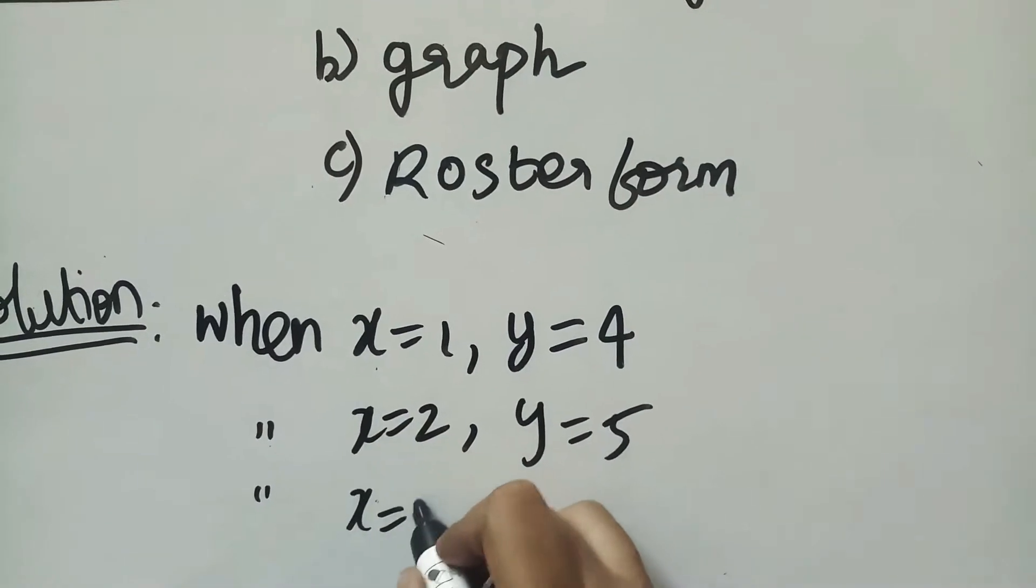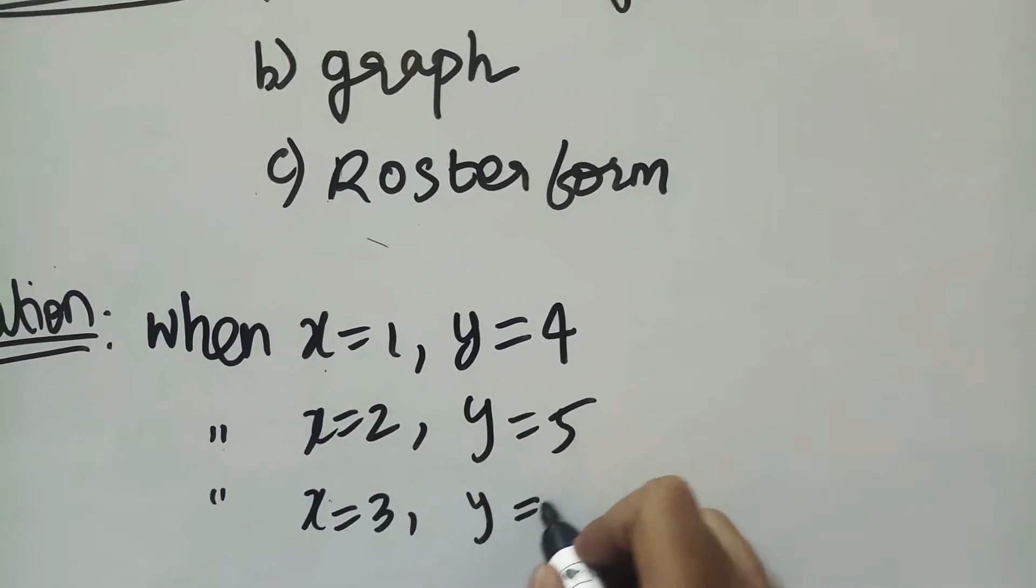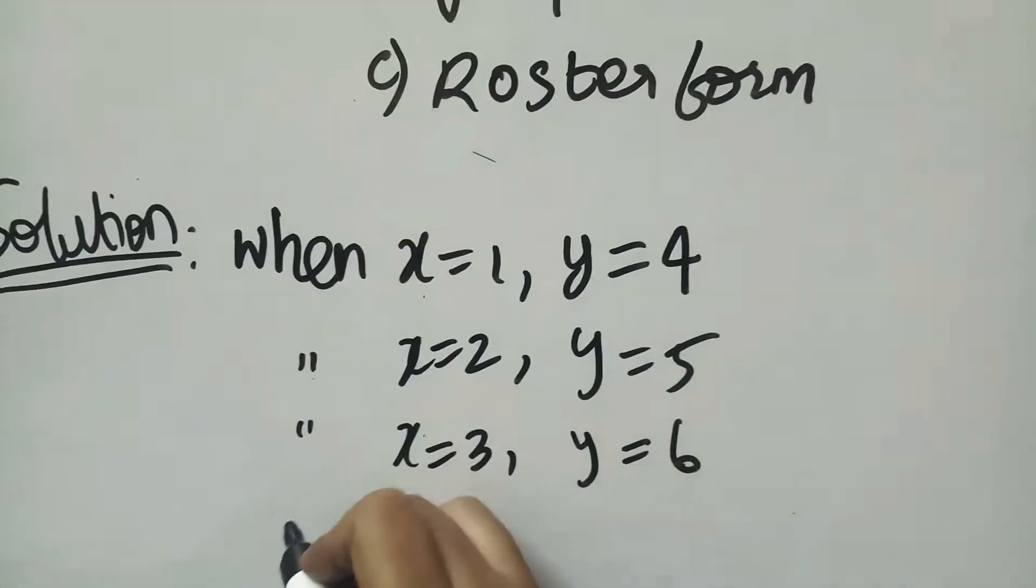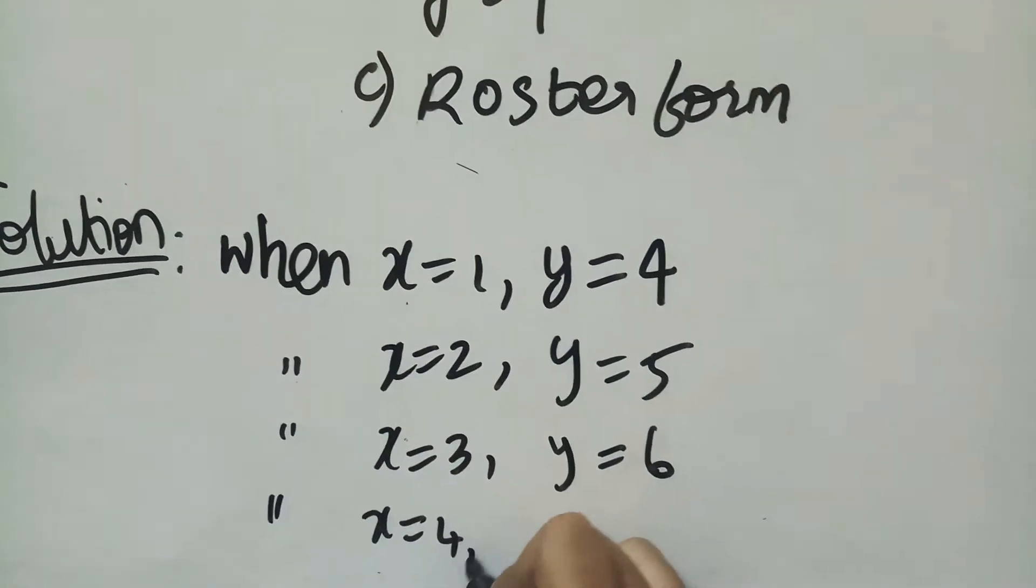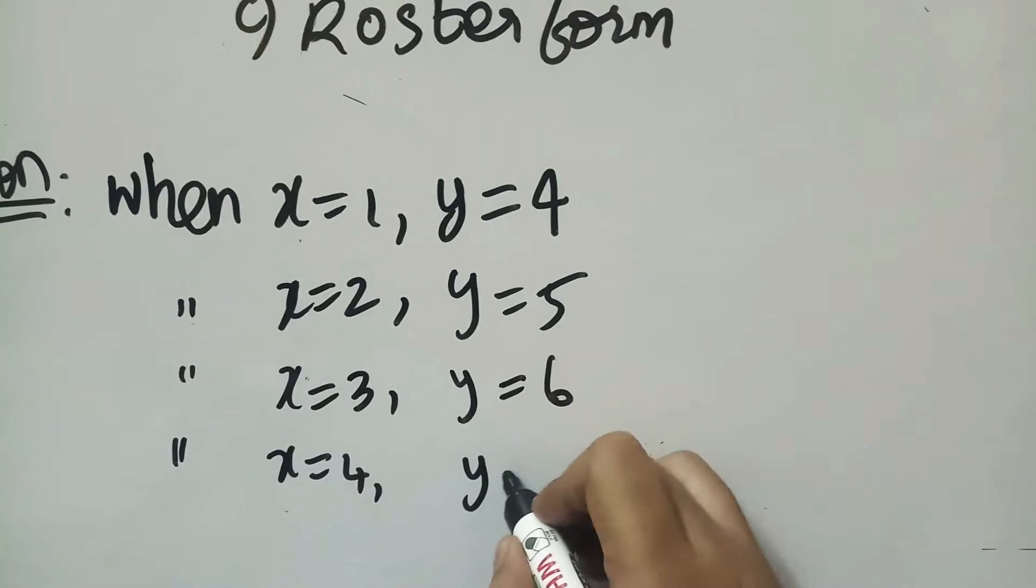When x is equal to 3, y is equal to 3 plus 3, which is 6. Belongs to natural numbers less than 10. When x is equal to 4, y is equal to 4 plus 3, which is 7.